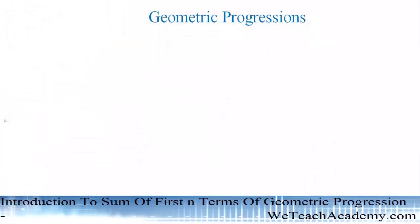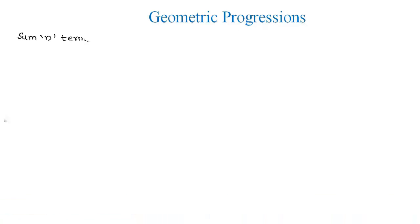Hello friends, welcome back. In our previous video we have discussed about geometric progressions and also solved few examples on the nth term of geometric progressions. Now let us learn how to find the sum of first n terms of a geometric progression whose first term is a and common ratio is r.